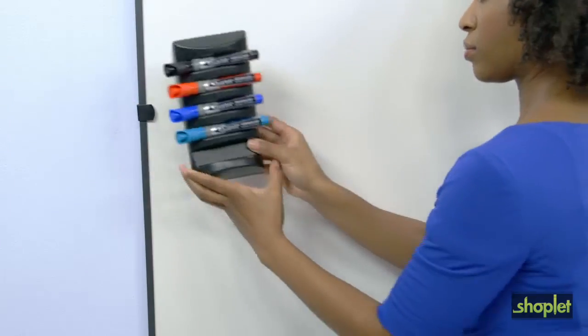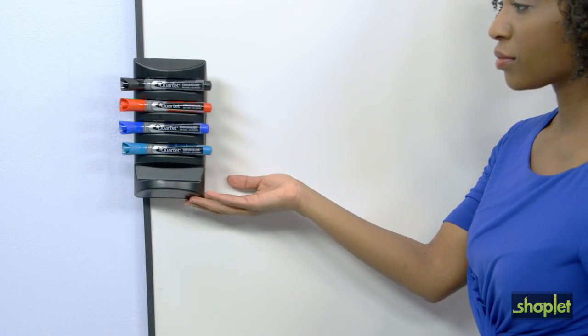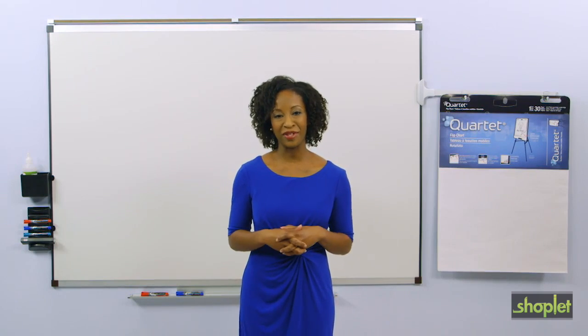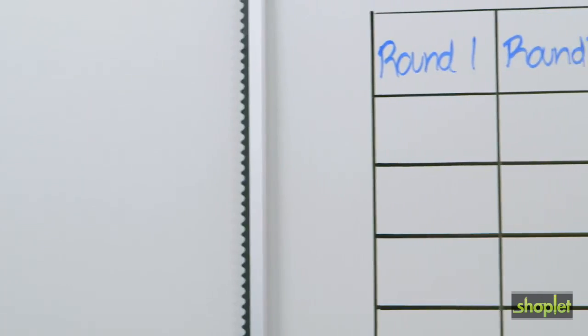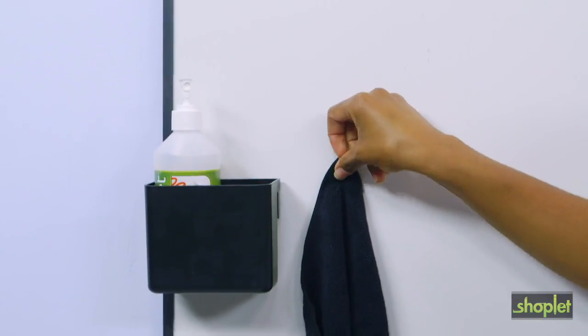Customize your Prestige II Total Erase Whiteboard with up to 9 different accessories for a fully functional, convenient and collaborative workspace. Available in multiple sizes and frame colors. Purchase the Quartet Prestige II Total Erase Whiteboard and accessories today.